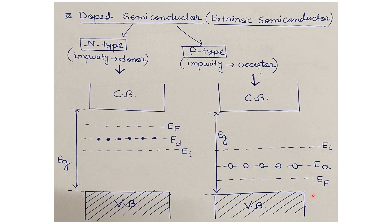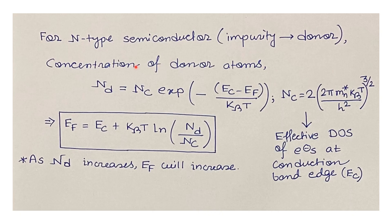At sufficiently high temperature such as room temperature, donors or acceptors become completely ionized. For an n-type semiconductor under complete ionization, the donor concentration is given by ND = NC·exp[-(EC - EF)/kBT], where NC = 2·(2π·mn*·kBT / h²)^(3/2) is the effective density of states at the conduction band edge EC.